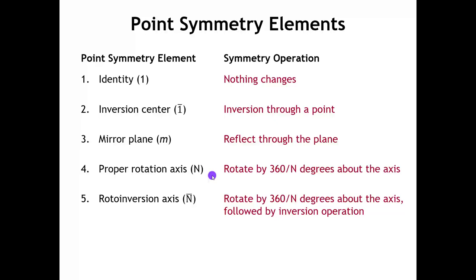The proper rotation axis is quite simple to visualize. If we have a proper rotation axis of order n, that means we rotate about that axis by 360 degrees divided by n. The improper rotation axis in the Hermann-Mauguin system is a little different from what you might have seen in the Schoenflies system used for molecules. In the Schoenflies system, an improper rotation axis is a rotation by 360/n followed by a reflection through a perpendicular mirror plane. But in the Hermann-Mauguin system, the improper rotation axis is a rotoinversion axis — we rotate by 360/n and then invert through a point, with the axis passing through that inversion point.